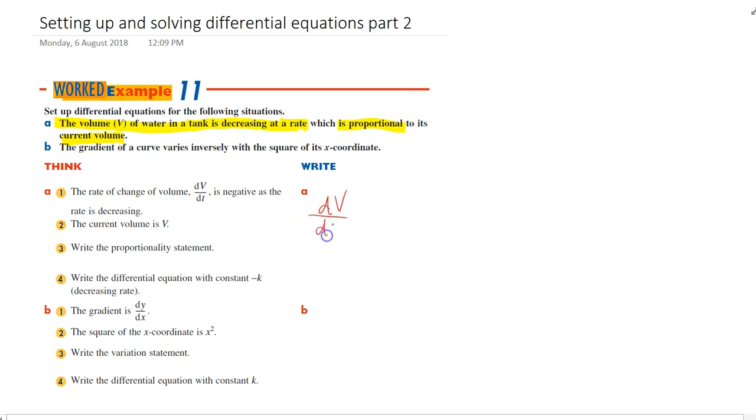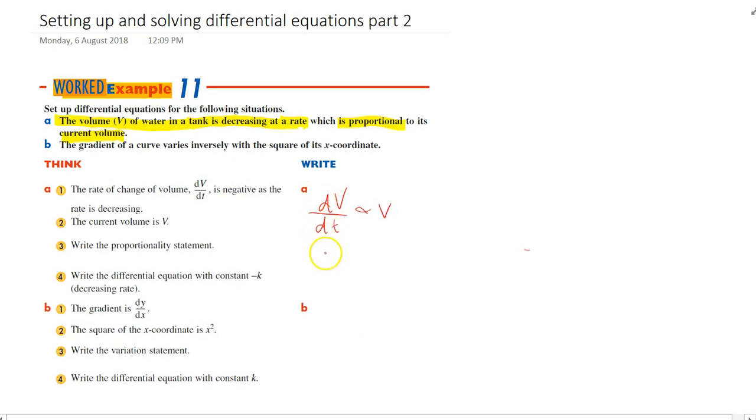So what we can say is that the change in volume with respect to time is proportional to the current volume. And then finally we can finish that off by saying that the change in volume with respect to time is equal to kV, where k is some constant. That's really all this question is asking us to do.